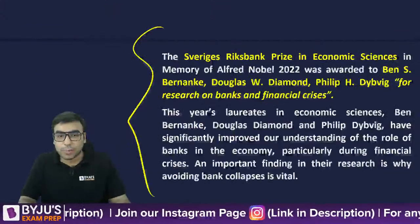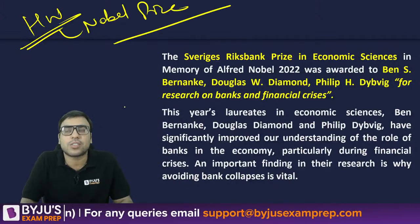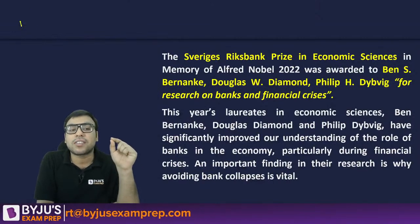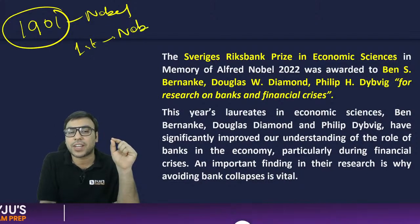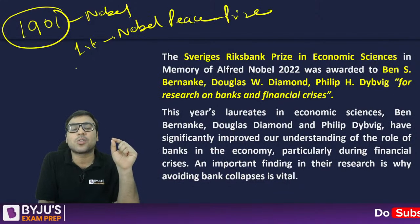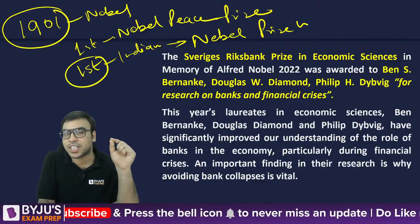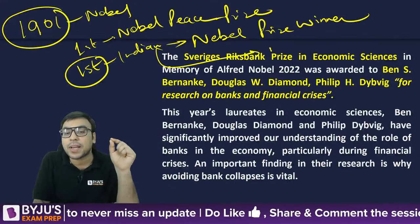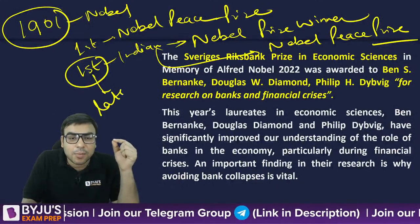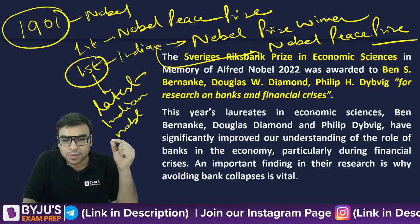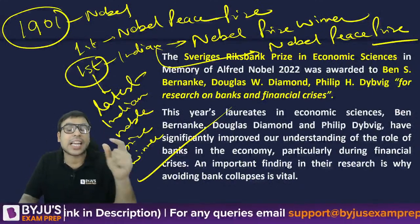For homework, please make notes on Nobel Prize and find out: who got the first Nobel Prize in 1901, who is the first Nobel Peace Prize winner, who is the first Indian Nobel Prize winner, who is the first Indian Nobel Peace Prize winner, and who is the latest Indian Nobel Prize winner of Indian origin. These are very important and can be asked in the examination.